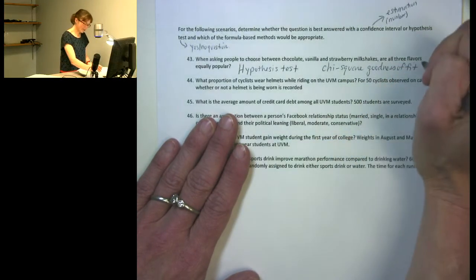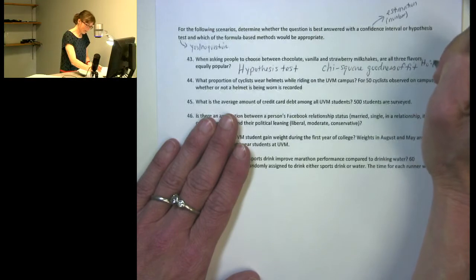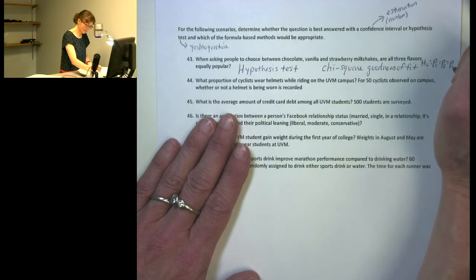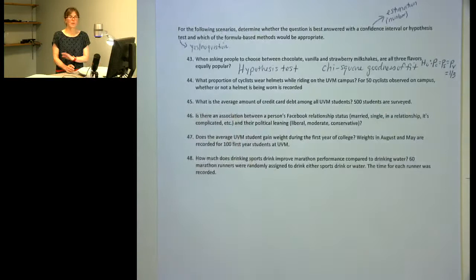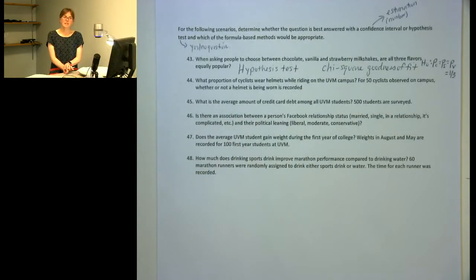In this situation, our null hypothesis would be that the proportion who prefer chocolate is equal to the proportion who prefer strawberry is equal to the proportion who prefer vanilla, and they're all one-third. And that would be our null hypothesis for our goodness of fit test.